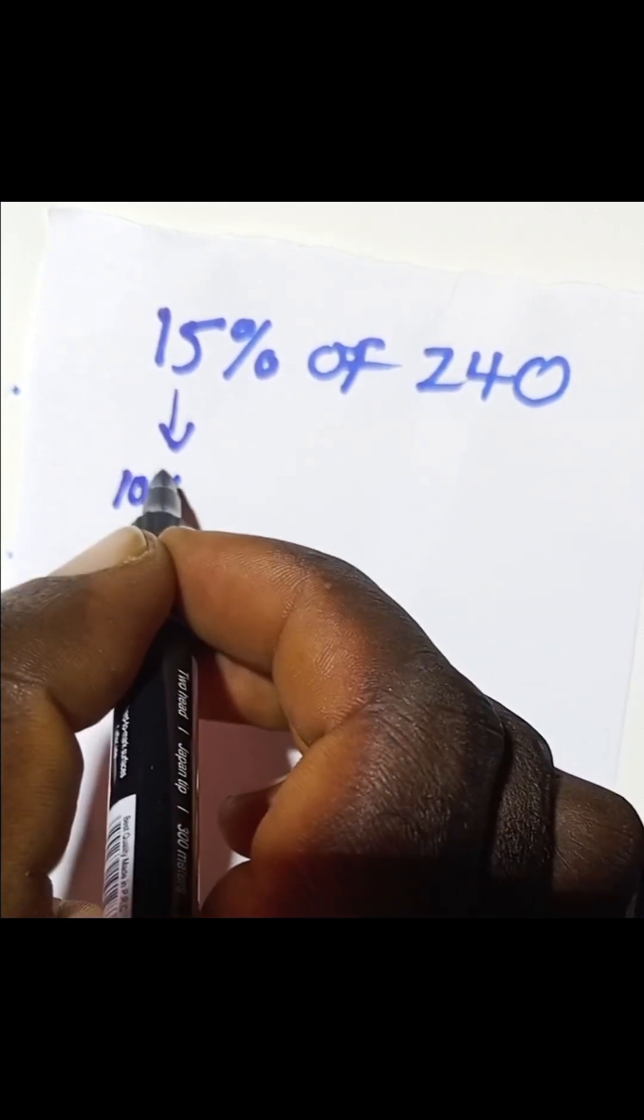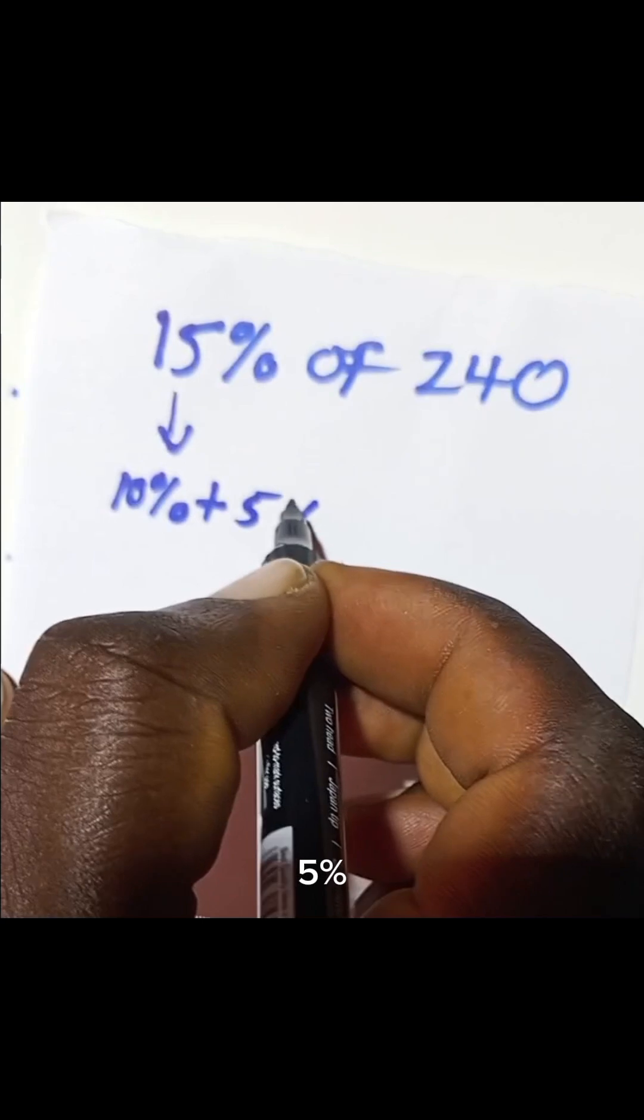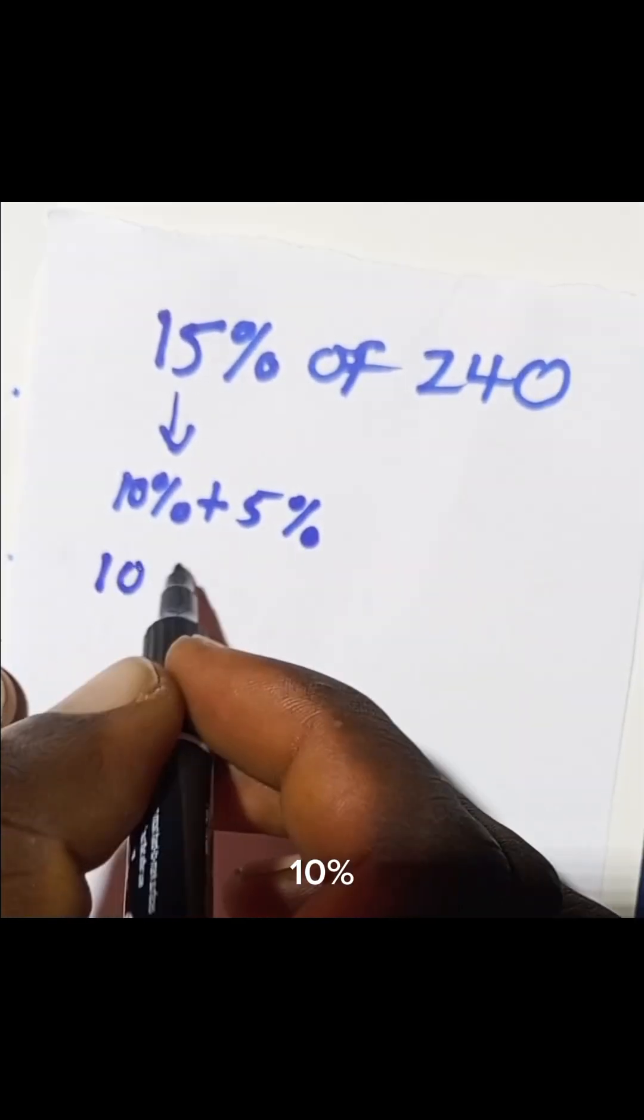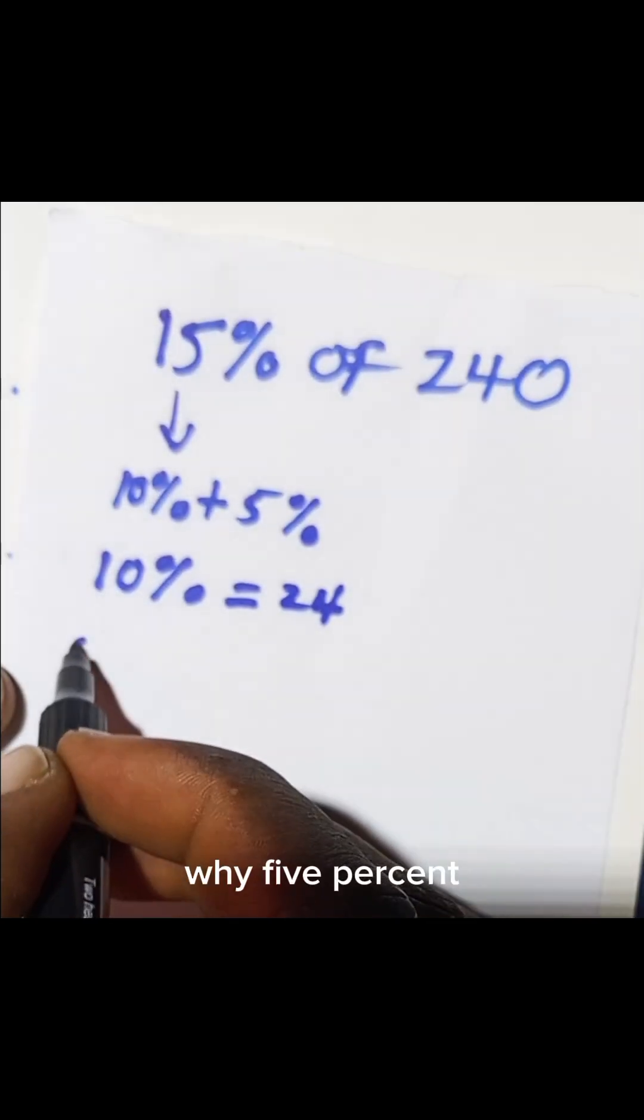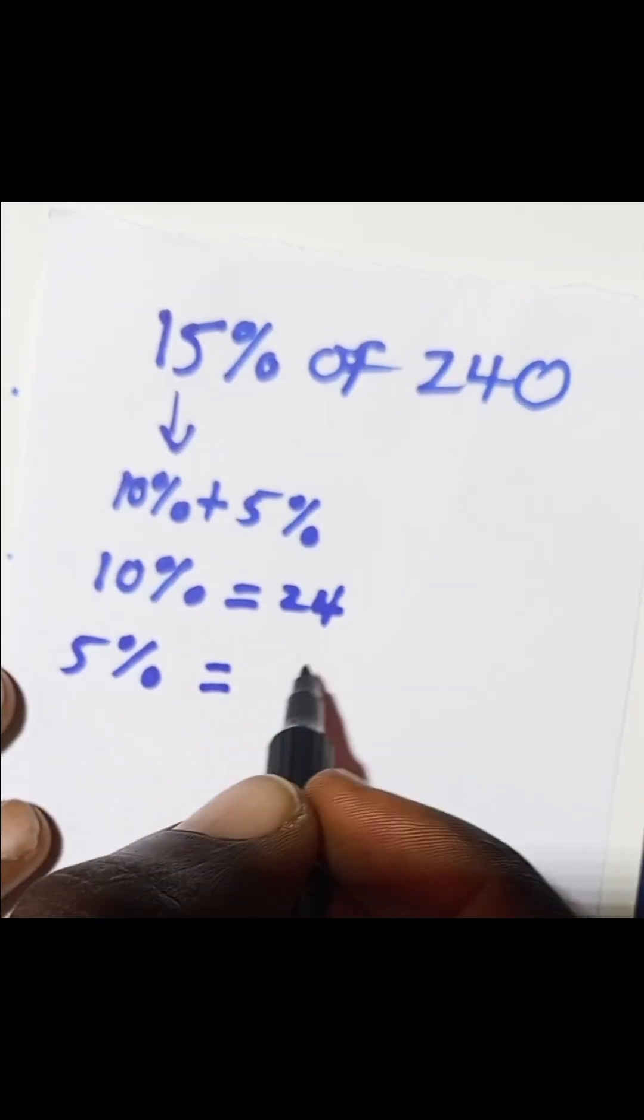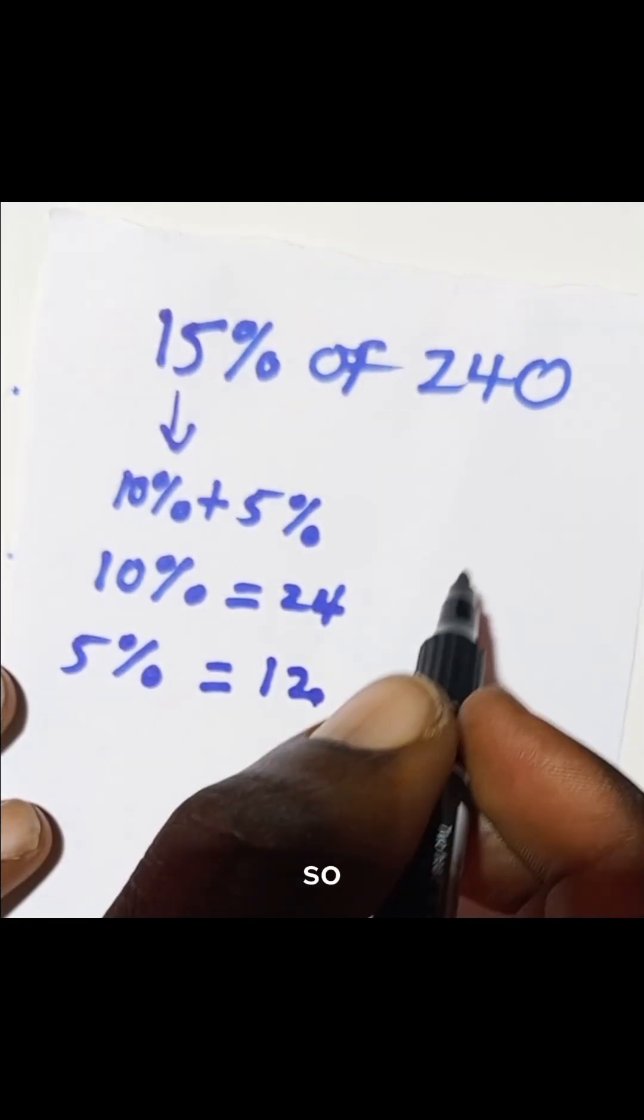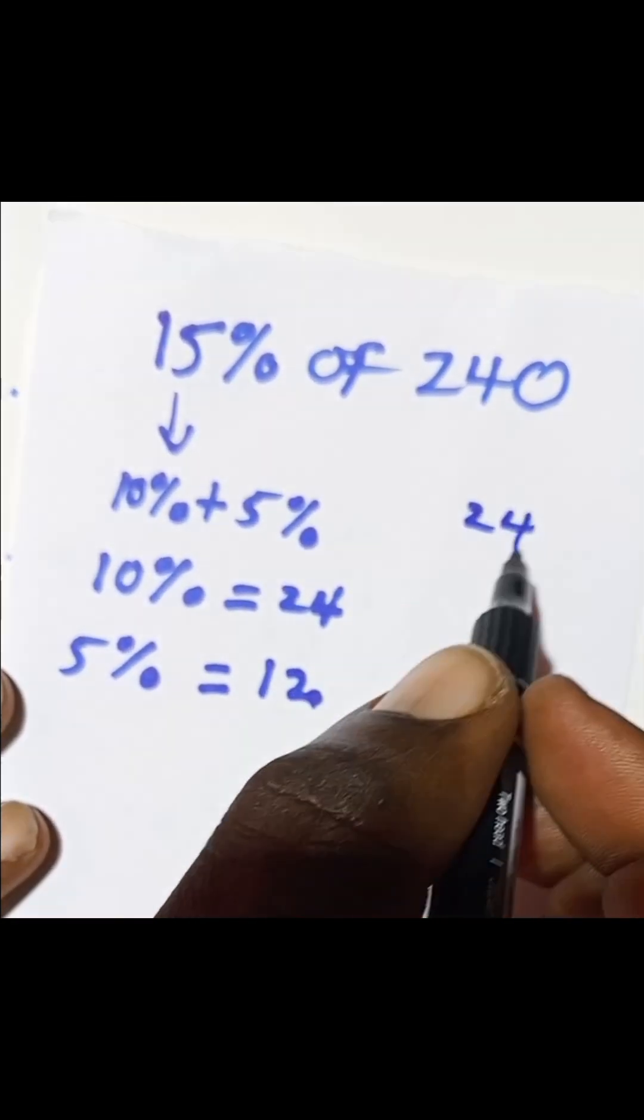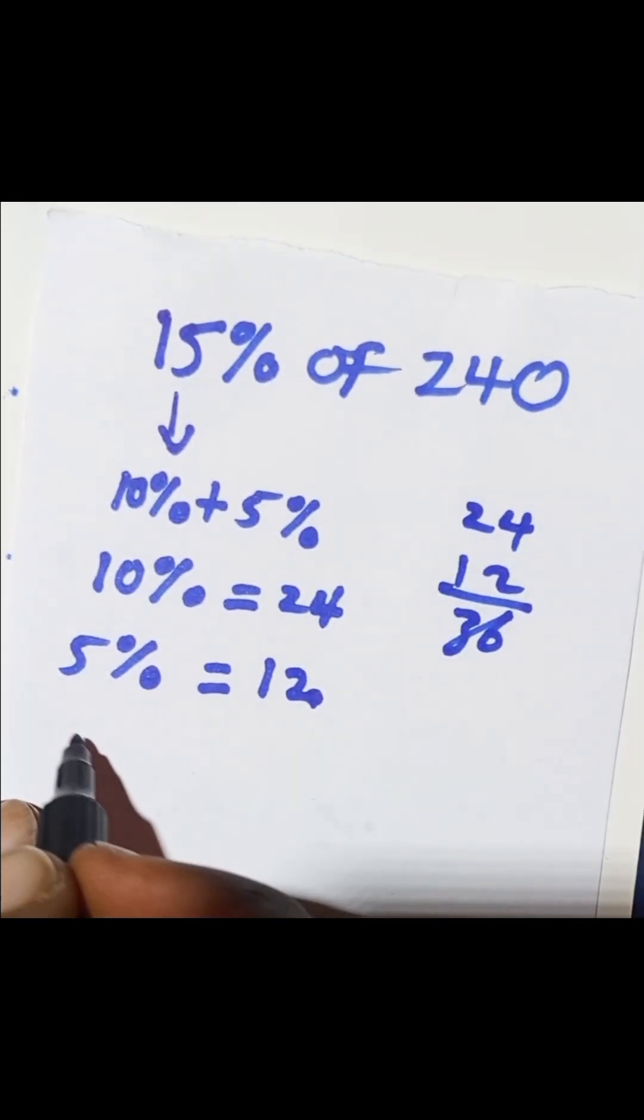10 percent plus 5 percent. If 10 percent of 240 will give you 24, while 5 percent of 240 will give you 12, so 24 plus 12 will give you 36. So therefore,